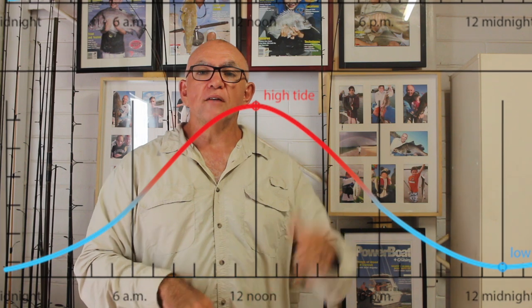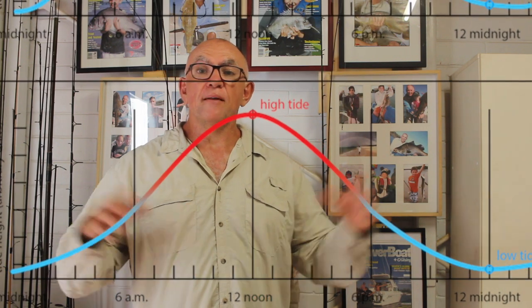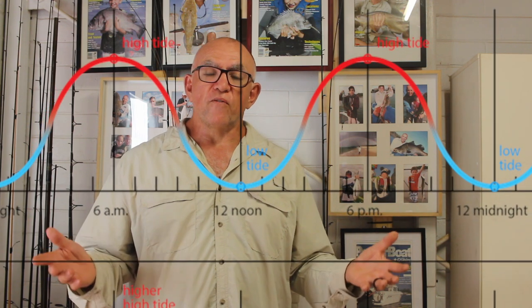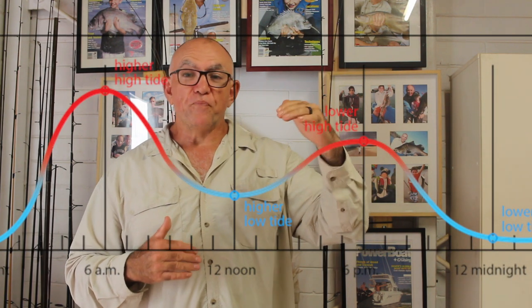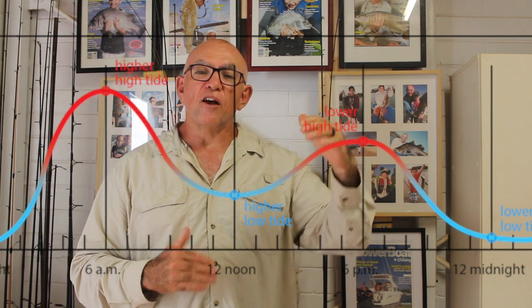Diurnal tides mean one high tide and one low tide once a day — diurnal means daily. Semi-diurnal tides are the most common: two high tides and two low tides in a 24-hour day. A mixed semi-diurnal tide is where you have two highs and two lows, but there's a massive variance between the tidal range of one set of highs and lows versus the other. Our semi-diurnal tides also vary slightly because of the axis on which the world spins.